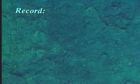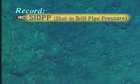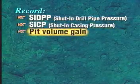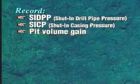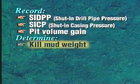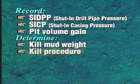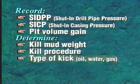Rather than shutting in the well and building up pressure, the diverter directs flow away from the rig. Assuming we do shut in the well, we have to record three items of information: shut-in drill pipe pressure, shut-in casing pressure, and pit volume gain. We use this information to calculate our mud weight requirements, design our kill procedure, and determine the type of kick fluid.